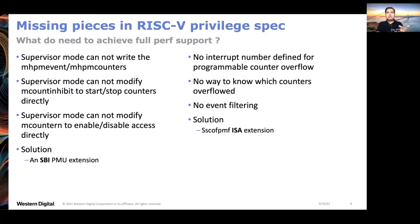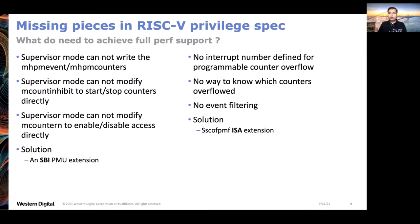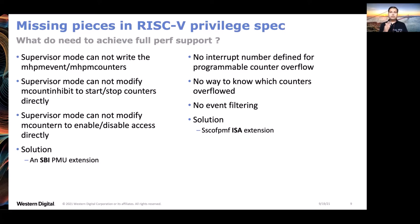Once counter overflow happens, the supervisor mode interrupt handler gets called. In that interrupt handler, it needs to know which counters actually overflowed, otherwise it doesn't know how to compute the overflow value. Also, there is no mechanism for event filtering. For all these features we need an ISA extension - the Sscofpmf extension - which was proposed and is on its way to being frozen. SS stands for supervisor-level extension, COF stands for counter overflow, and PMF stands for privileged mode filtering. We'll go over each of these extensions one by one to understand what they provide.